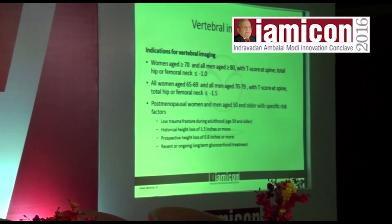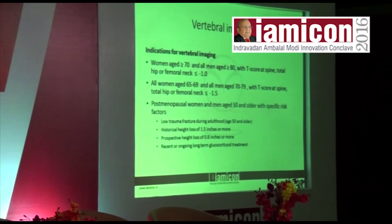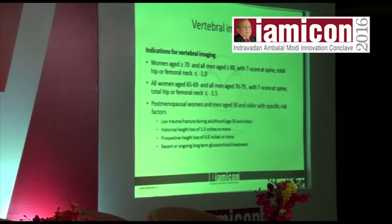Indications for vertebral imaging: women aged 70 or older and men aged 80 or older with T-score at spine, total hip, or femoral neck less than minus 1.0. All women aged 65 to 69 and men aged 70 to 79 with T-score less than or equal to minus 1.5. Men and women aged 50 or older with low-trauma fracture during adulthood — meaning the patient was just walking, someone pushed them, and they fell and fractured. Also, historical height loss of 1.5 inches or more, prospective height loss of 0.8 inches or more, or recent long-term glucocorticoid treatment.